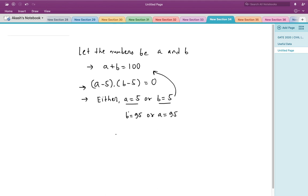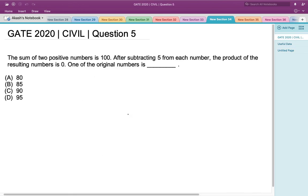So the two numbers are 95 and 5. Let's look at the options and map the answer. The only option that matches one of our numbers is option D, so option D, 95, is the right answer. Thank you.